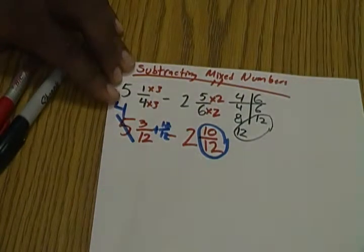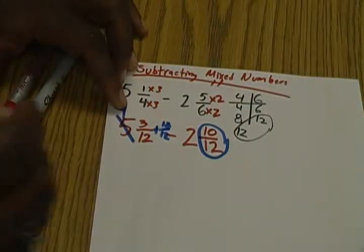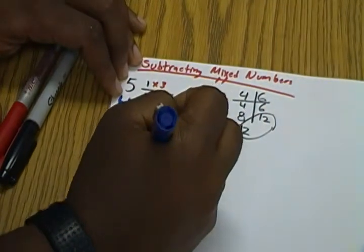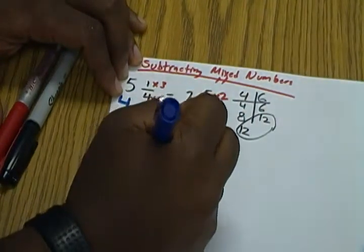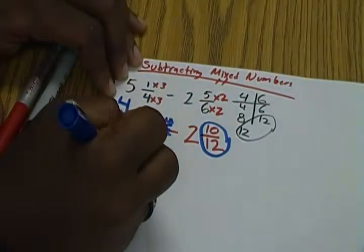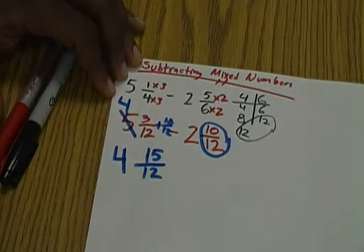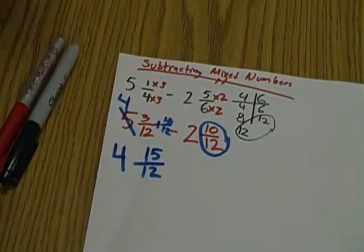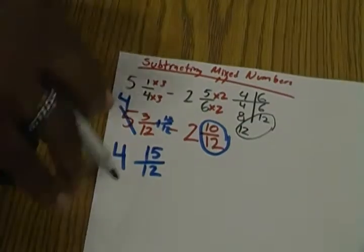So our new denominator now, 3/12 plus 12/12 gives us 15/12. We want it to be improper so it can be a larger one. It's just the same thing as if we have a regular subtraction problem and you borrow from the tens place. It's the exact same thing.